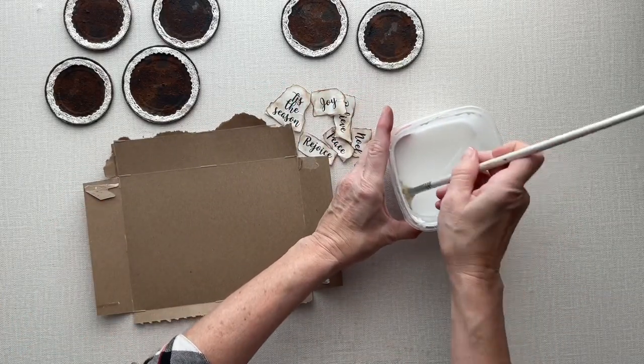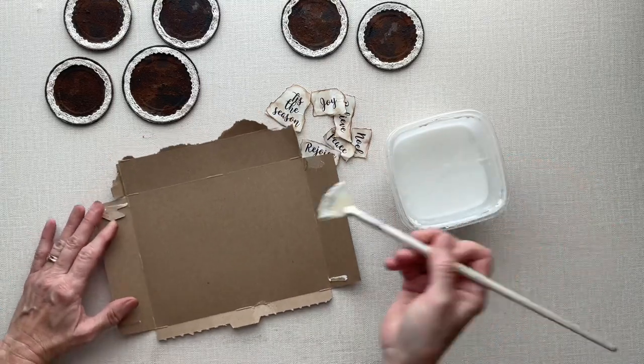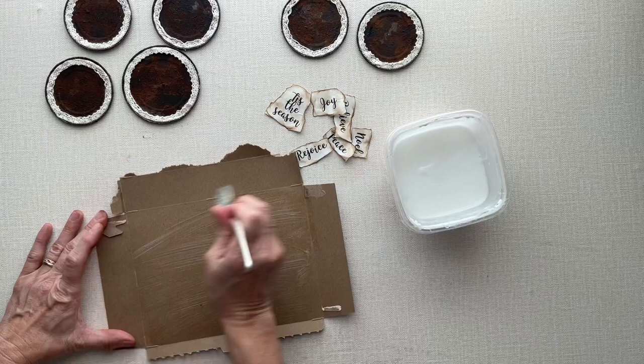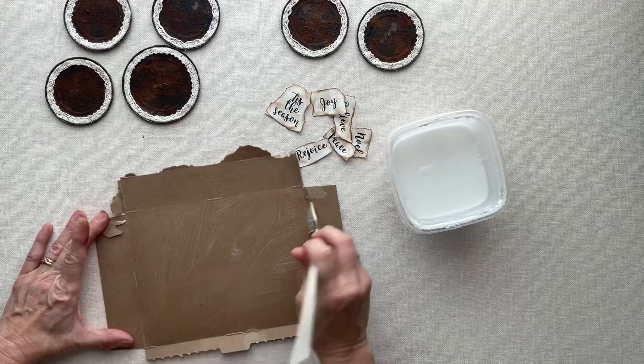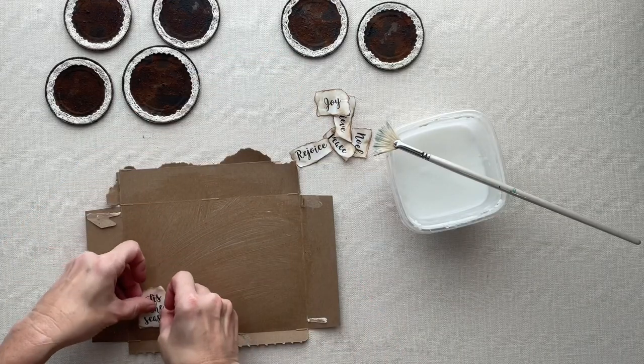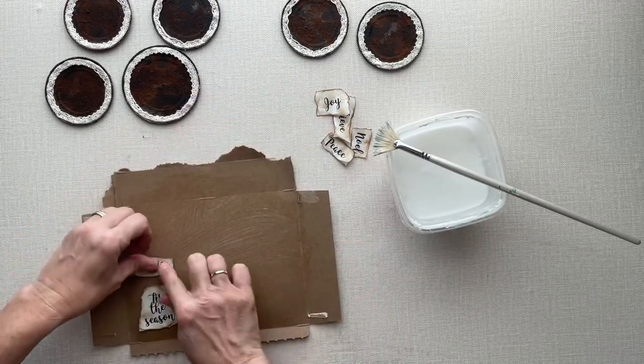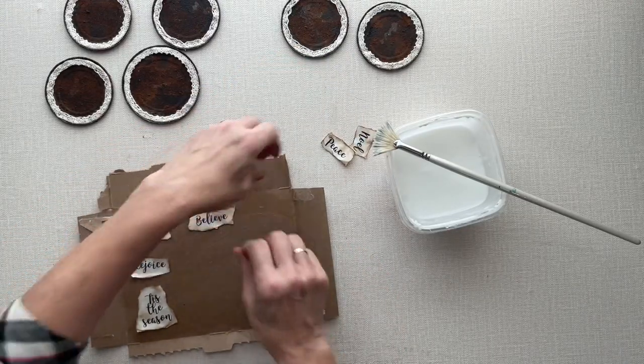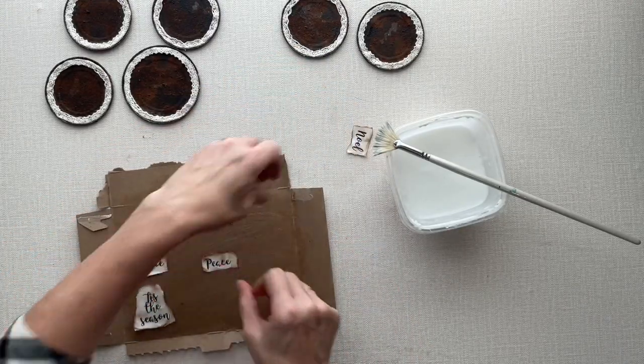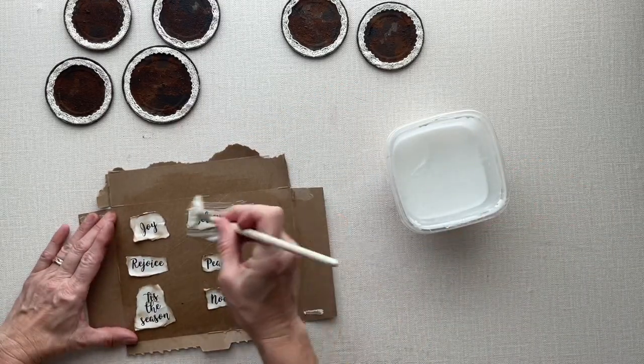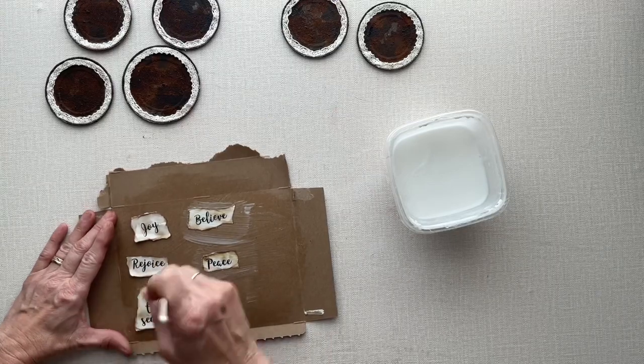This is just like cereal box cardboard, and I'm brushing on the water and glue mixture so that I can glue those words on. I'm placing them far enough apart where I can tear around them. I'm going to brush on top too, to seal it in.